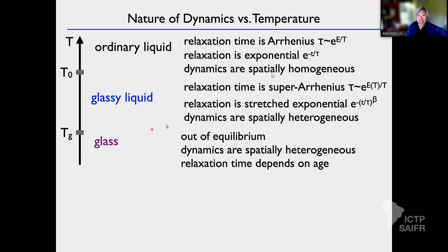So these are things we want to understand. First of all, let me describe how we quantify dynamic heterogeneity. That's done through a quantity called the overlap parameter.